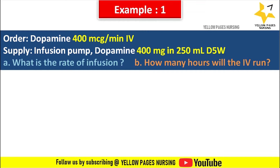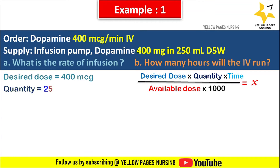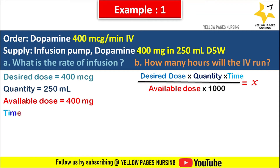The formula is: desired dose × quantity × time ÷ (available dose × 1000) = x. Here, the desired dose is 400 microgram, quantity is 250 ml, available dose is 400 mg, and time is 60 minutes.